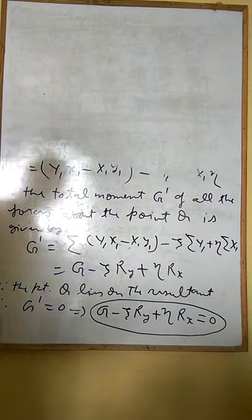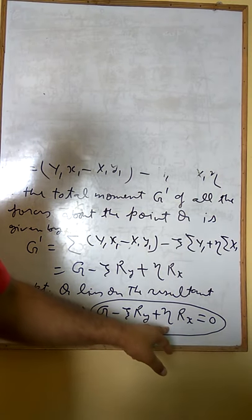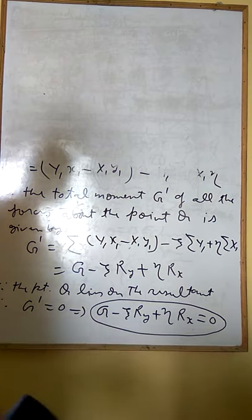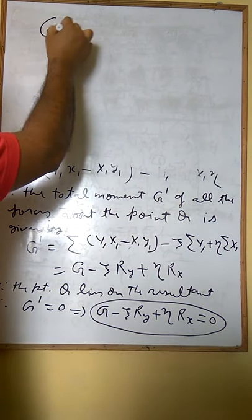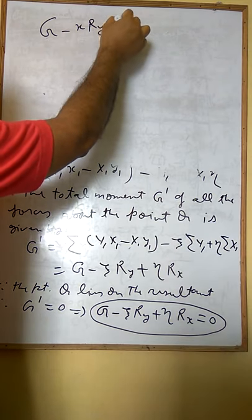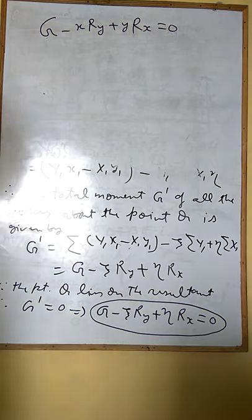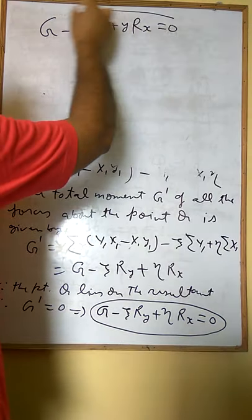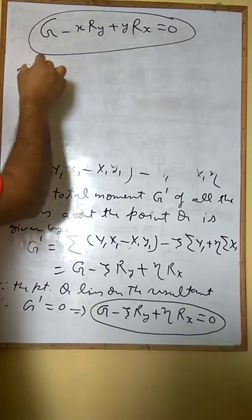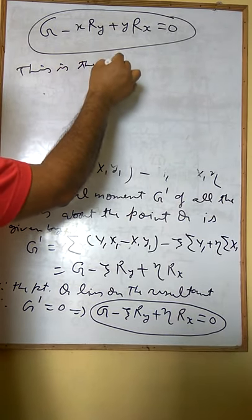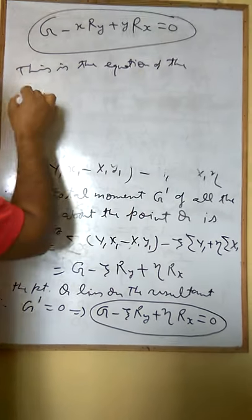This is the line of action of the resultant. If you replace Rx = 0, this is our equation of the resultant: G - ξRy + ηRx = 0.